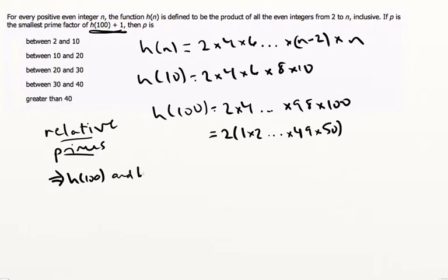So what that's telling us is that that would imply then that h(100) and h(100) + 1 share no factors except for one.